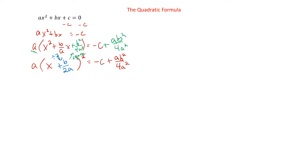We're going to continue completing the square in a second. But first, I'm going to come up here — we're going to add c and subtract that ab squared over 4a squared to the other side, because I did make a promise to you earlier on in the year.